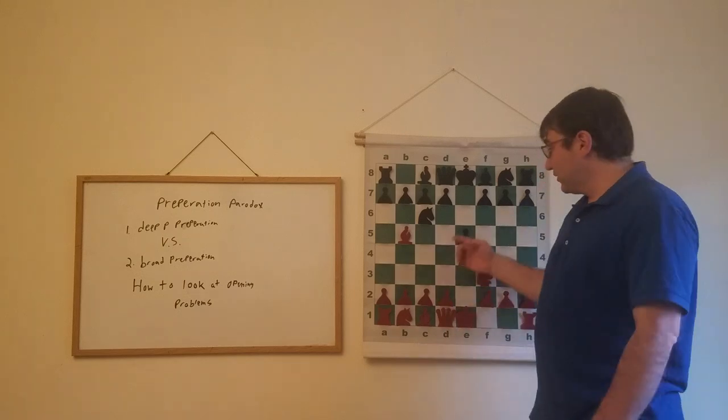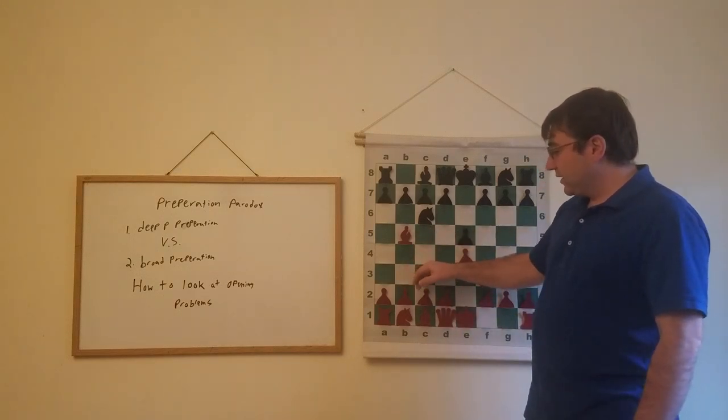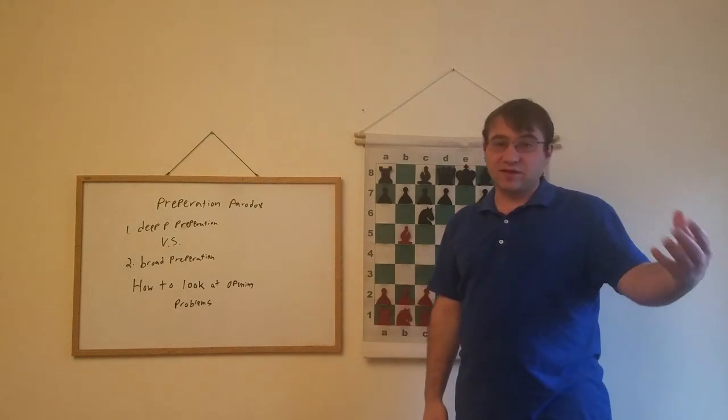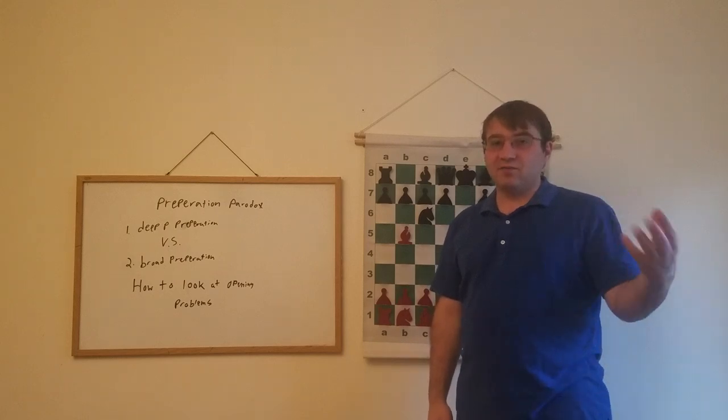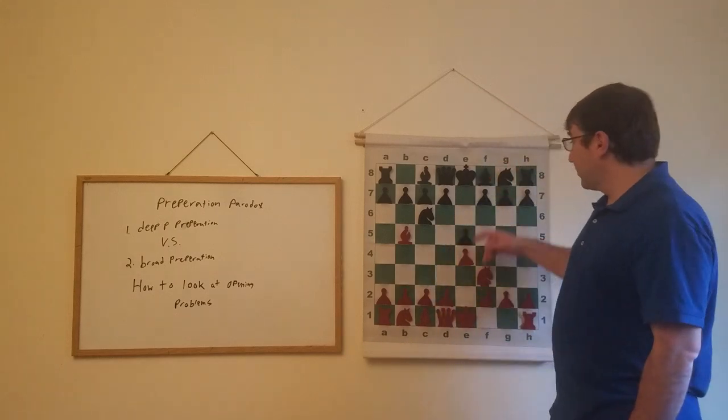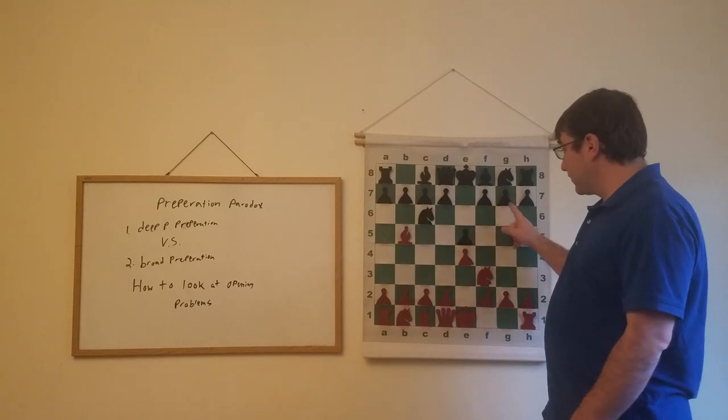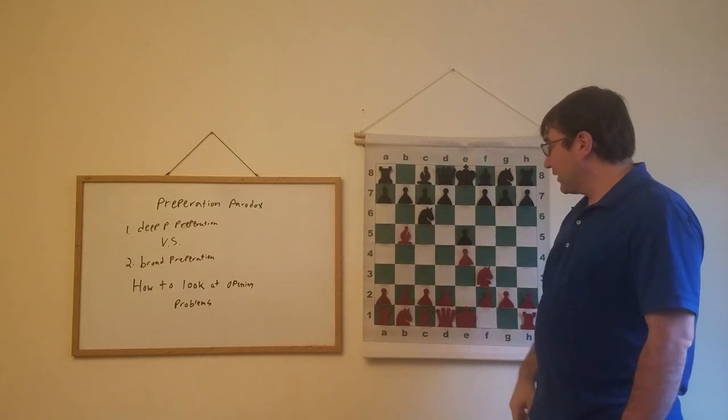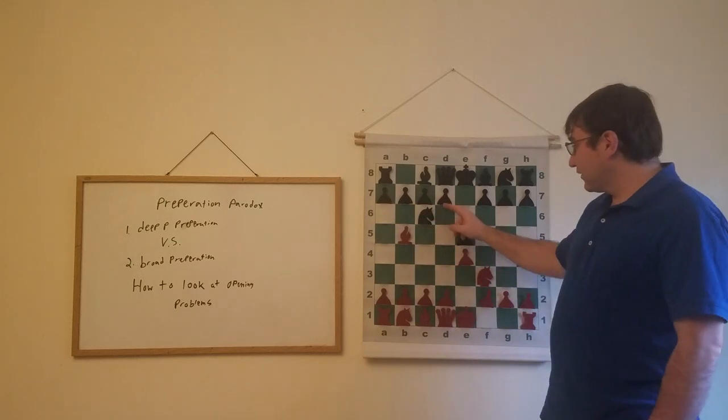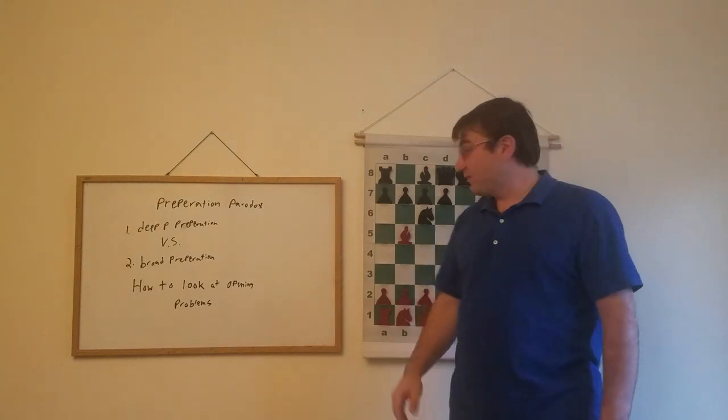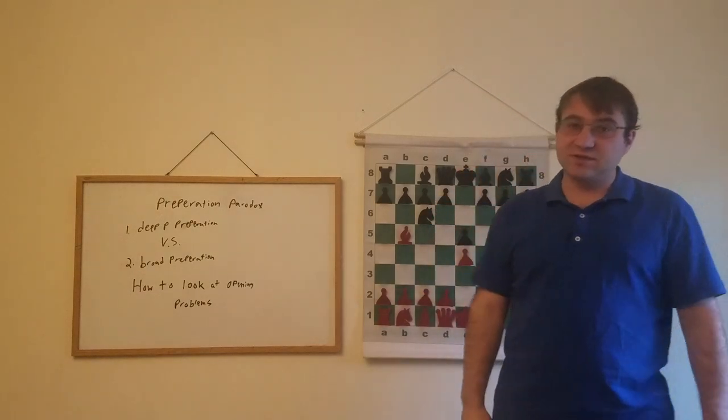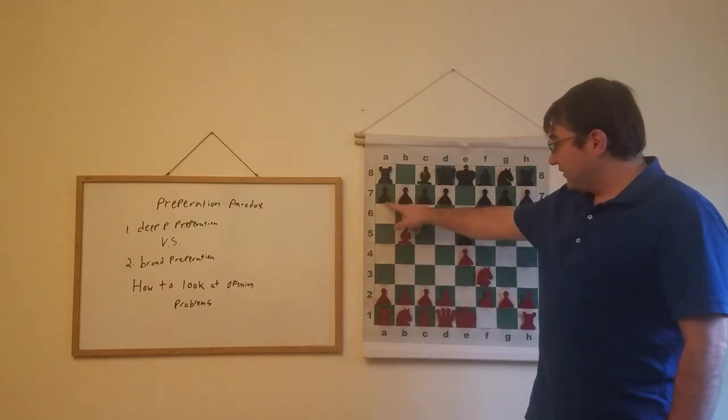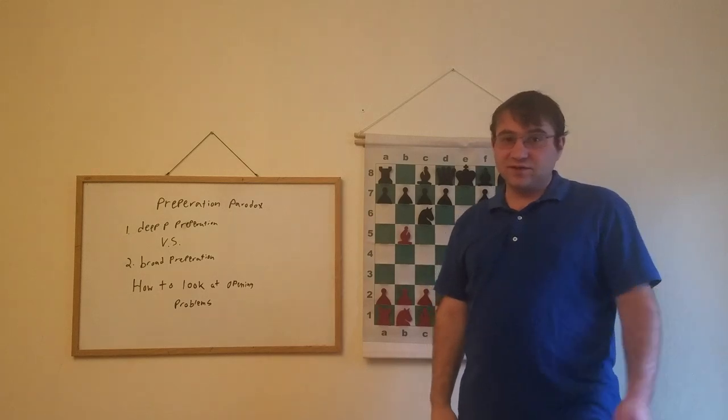It's a highly flexible move. It puts indirect pressure on the center of the board, it allows you to create the most ideal pawn structure later on in the game, and it also allows the greatest number of responses from black. Black can reply with the Berlin Defense with knight f6, black can reply with g6, d6, bishop c5, knight on g to e7, with a6, or even f5 which is called the Schliemann variation. That's called the Steinitz variation. All these moves are playable, actually even knight d4, Bird's variation is playable.